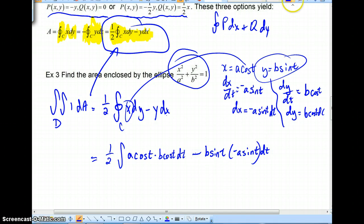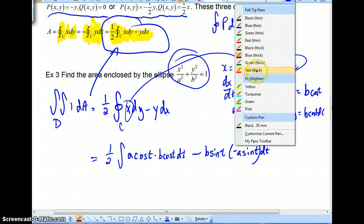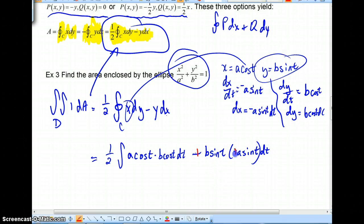Well, a negative and a negative are going to become a positive. And if we just wrote this all as having a dt at the very end, we could notice that we have AB cosine squared T. And we could say that we also have AB sine squared T.